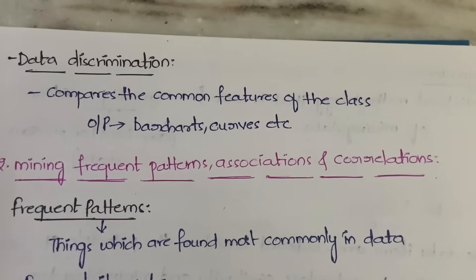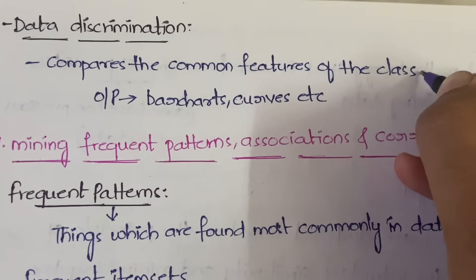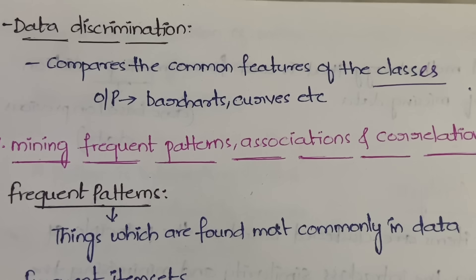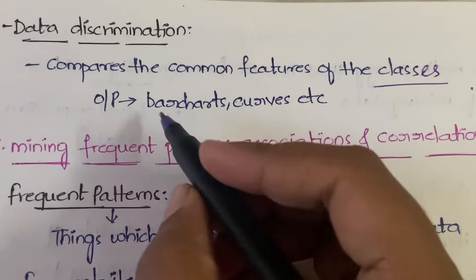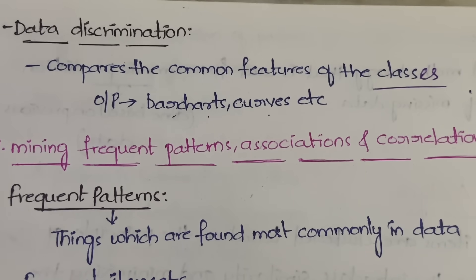After data characterization, we have data discrimination. In data discrimination, if we have two classes or two concepts, it will compare the common features between those two classes or concepts. In data characterization we write the summary, but in data discrimination we compare features and note common attributes. The output here can be bar charts, curves, or graphs.